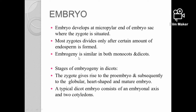In dicots, embryogenesis is similar in early stages but different in later stages. The stages of embryogeny in dicots are: first, the zygote gives rise to the pro-embryo, and subsequently to the globular, heart-shaped, and mature embryo.